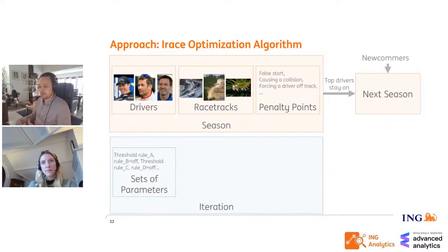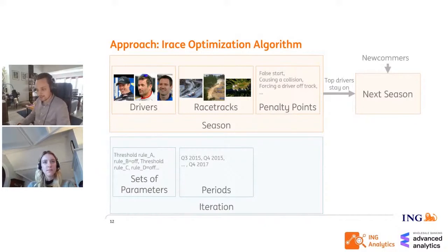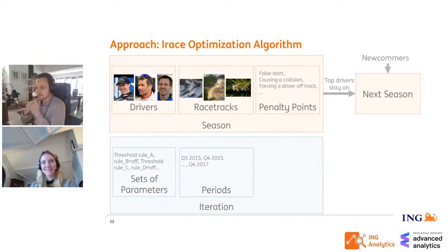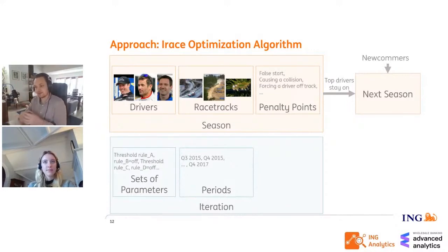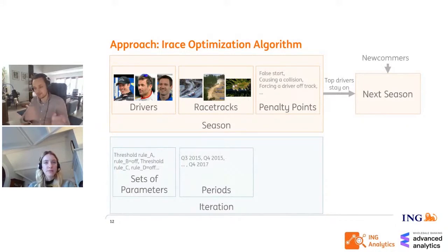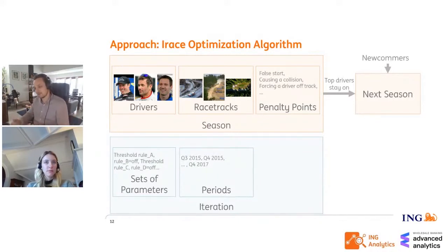So driver one might be: rule A is off, rule B is off, rule C is on with threshold X. Driver two is: rule A is on, rule B is off, etc. You evaluate them by seeing who is the best-performing set of parameters on different instances of your data — not race tracks, but subsamples of data. In our case we used quarters of data: testing one set of parameters on all loan applications from Q3 2015, then another set of parameters on the same Q3 2015 data, then moving to Q4 2015.